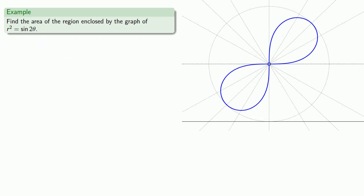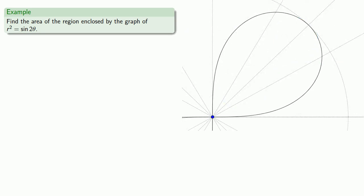We see that our graph is going to consist of two identical loops. So we can find the area of one loop and double it. One of those loops occupies the region between theta equals 0 and theta equals π over 2. We'll take a look at that region and draw our representative wedge. The area of the representative wedge is 1/2 r squared d theta. And we'll sum these wedges over the region between 0 and π over 2.